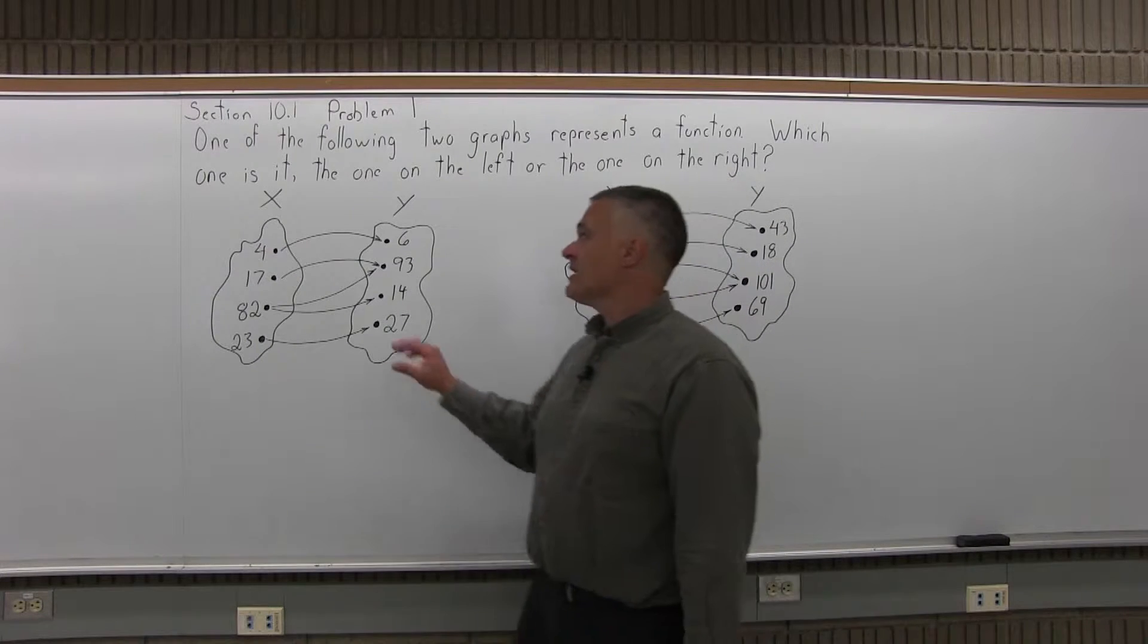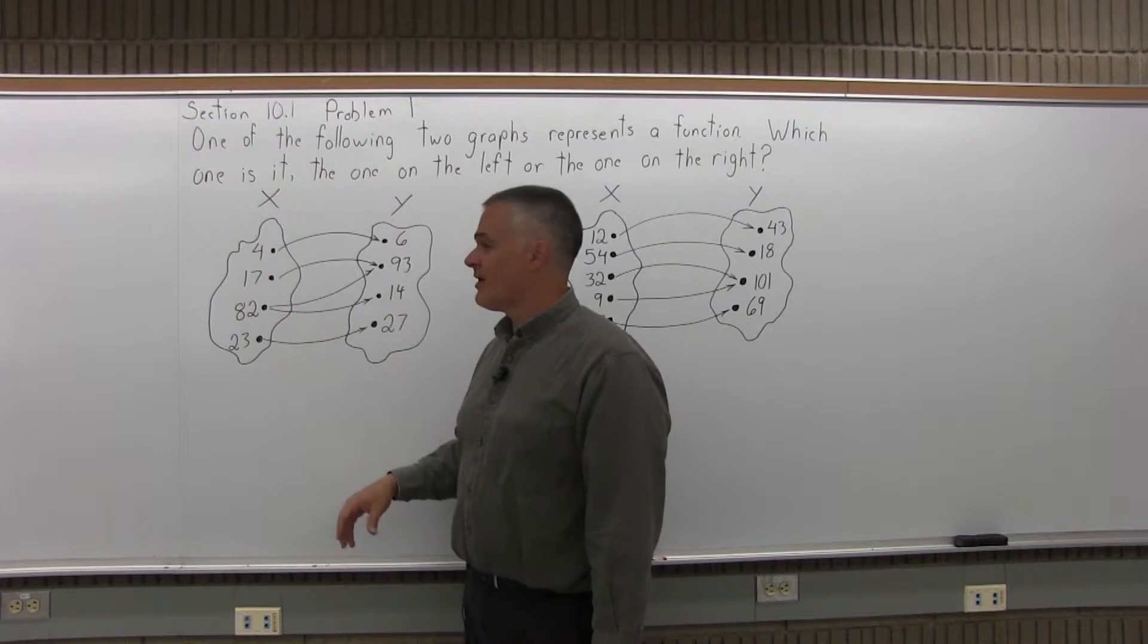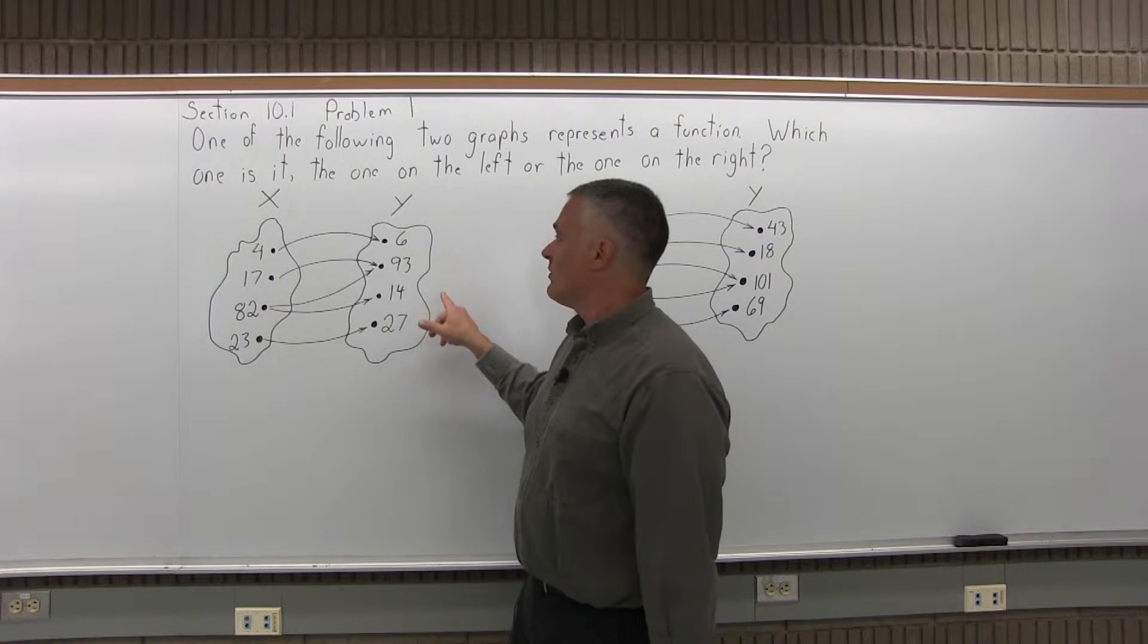So the two graphs have like an X and Y blobby looking thing, you might call it a cloud or whatever. And it's showing you from what values of X go over to Y.